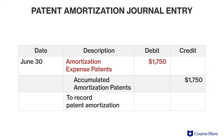The amortization amount is recorded as an amortization expense on the income statement as a debit, and the credit is to accumulated amortization, which is a contra-asset account used to reduce the carrying amount of the patent from its initial cost to an amount net of amortization already taken.